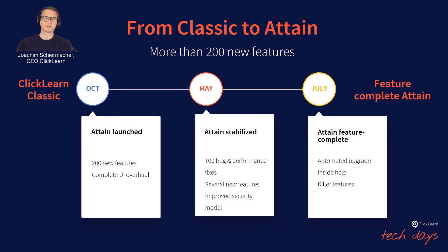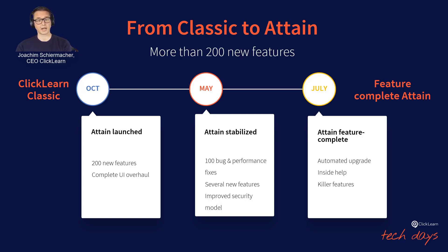The May release is the step before the final release of a feature-complete version of Attain, and it is a product that we are bringing to the market. It is absolutely also the right choice for nearly all ClickLearn customers. Our next release is July 5th, and it will include the automated upgrade, inside help, and some killer features that we are going to cover a little later.